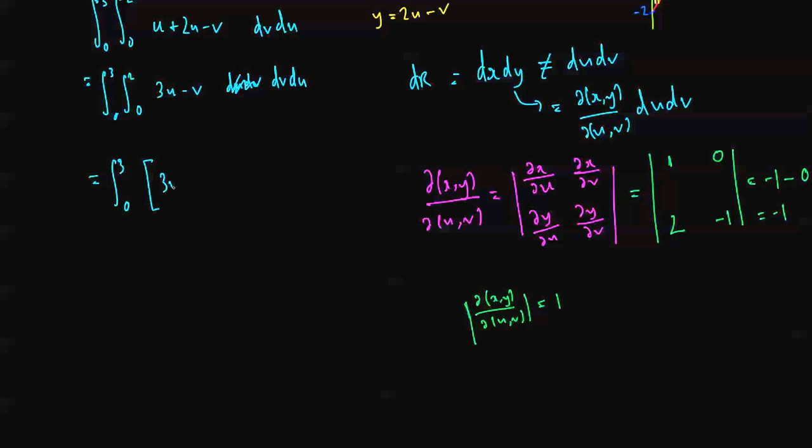That becomes 3uv minus a half of v squared, and I'm subbing in v equal to 2 and v equal to 0, du. That's equal to v equal to 2 is going to give me 6u minus 2, and the 0s are just going to give me 0 again.